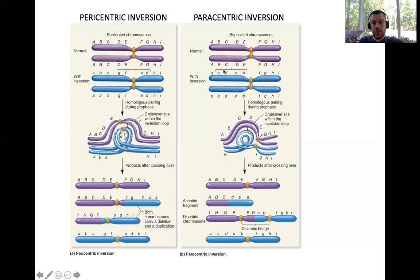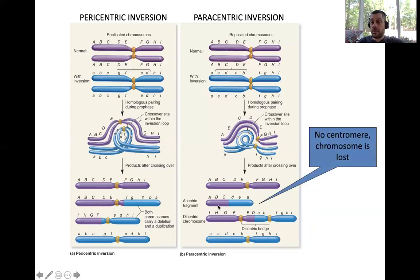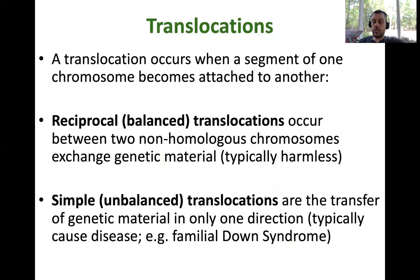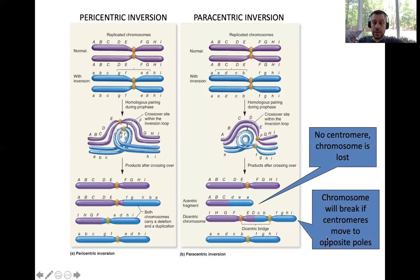In the case of a paracentric inversion — one that doesn't contain the centromere — you get slightly different outcomes. After a crossover, one chromosome contains two centromeres; that's called a dicentric chromosome. The other one doesn't contain a centromere at all — it would be lost because there's no centromere to pull it to any cell during cell division. The dicentric chromosome would probably get broken apart if the centromeres are pulled to opposite poles during cell division. So you're going to get some weird gametes formed in both of these cases.